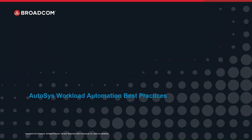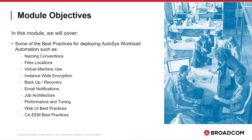Autosys Workload Automation Best Practices. In this module, we will cover some of the best practices for deploying Autosys workload automation. These practices include implementing naming conventions, selecting appropriate file locations, utilizing virtual machines, implementing instance-wide encryption, backup and recovery methods, email notifications, optimizing job architecture, performance and tuning, and implementing WebUI and CA-EEM best practices.